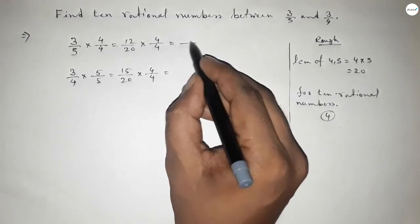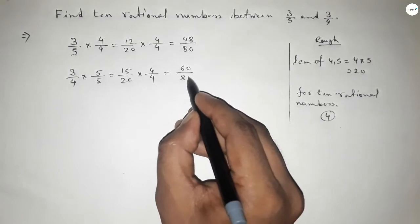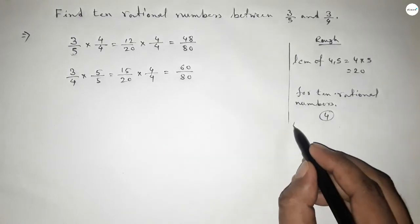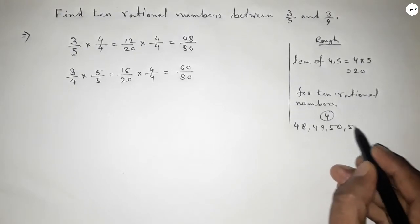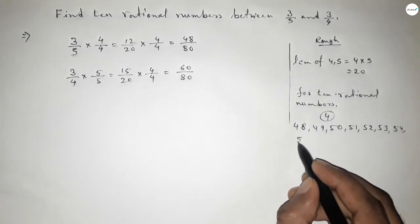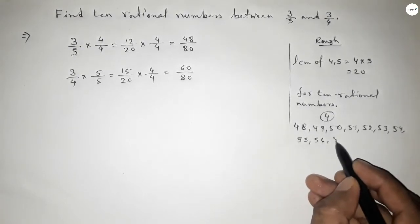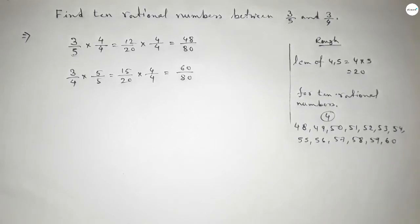So this is 48 over 80 and this is 60 over 80. Now between 48 to 60 we can get or we can find 11 natural numbers, and by these natural numbers we can form 11 rational numbers, but here we need only 10 rational numbers.